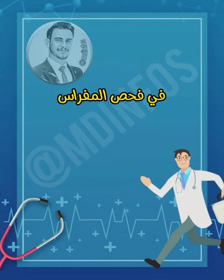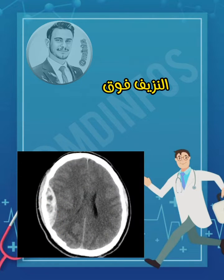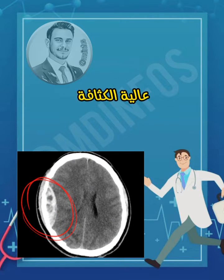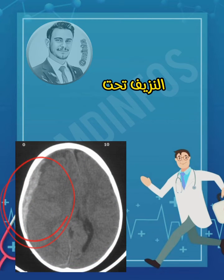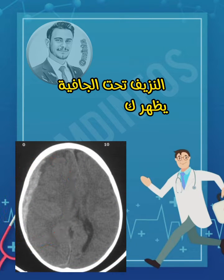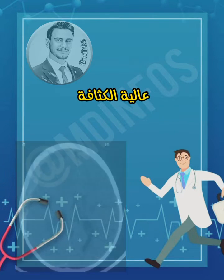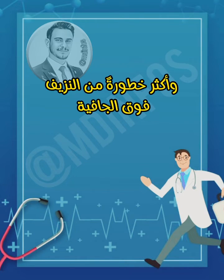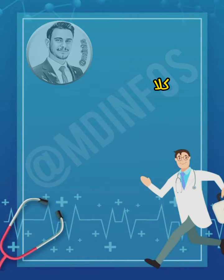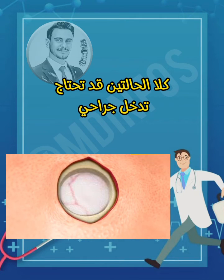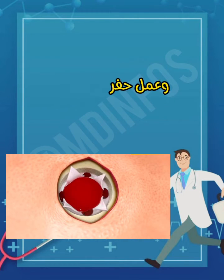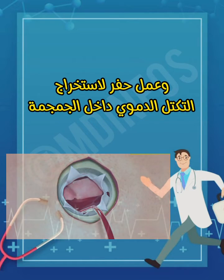On CT scan, epidural hemorrhage appears as a biconvex hyperdense mass, while subdural hemorrhage appears as a crescent-shaped hyperdense mass. Subdural hemorrhage is more common and more severe than epidural hemorrhage. Both conditions may need surgical intervention involving craniotomy and burr holes for evacuation of the hemorrhage.